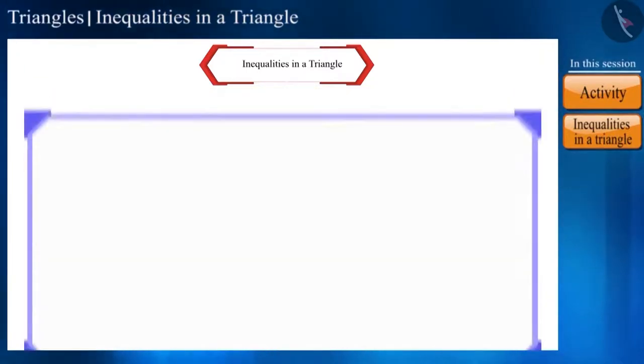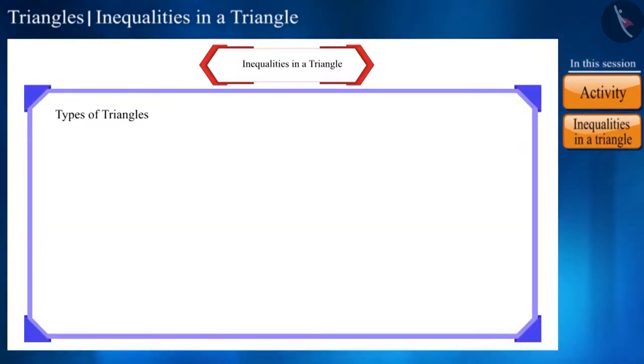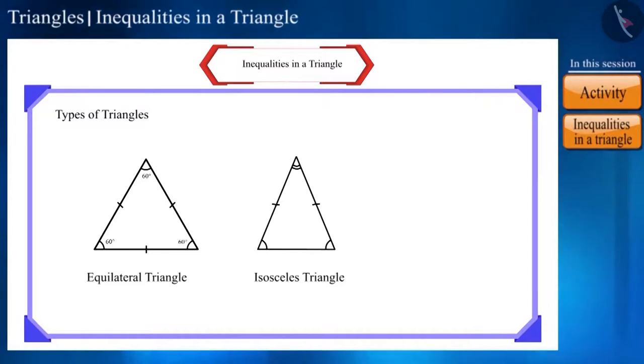Friends, we know that there are different types of triangles like equilateral triangle, isosceles triangle, and scalene triangle. We know that in an equilateral triangle, all three sides and angles are equal. In an isosceles triangle, two angles and their opposite sides are equal.